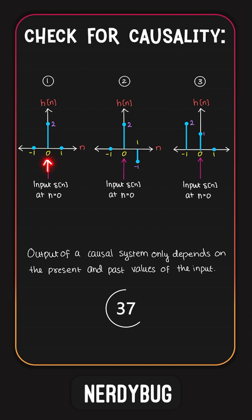In the first case, the input is given at n equal to 0 and the output is at n equal to 0. So the output depends on the present input. It is causal.